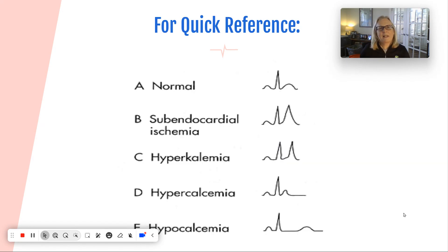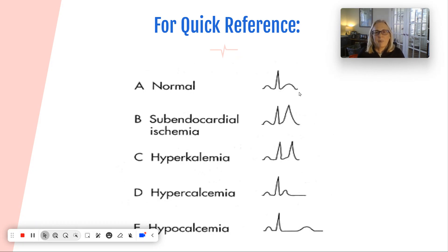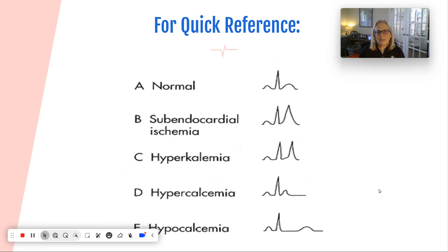For quick reference: ischemic peaked T waves and hyperkalemia peaked T waves look very similar - one might be a little wider. Hypercalcemia produces a short QT and short T wave. Hypocalcemia produces an elongated QT. Not on this list is hypokalemia, where the T wave will be flat. Remember they're opposites: hyperkalemia tall, hypokalemia flat; hypercalcemia short QT, hypocalcemia long QT.